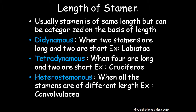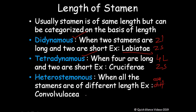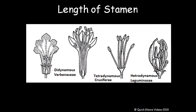On the basis of length of stamens: Didynamous — two stamens are long and two are short; example Labiateae. Tetradynamous — four stamens are long and two are short; found in Cruciferae. Heterostaminous — all stamens are of different lengths; example Commelina. These are the different types of classifications of androecium depending on stamens, filament, anther, length, and position.